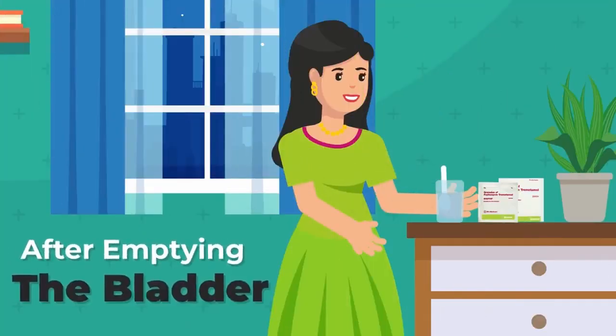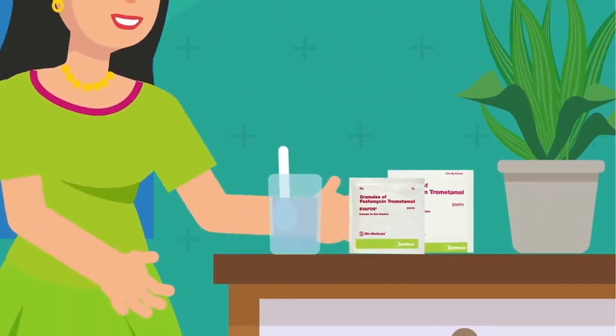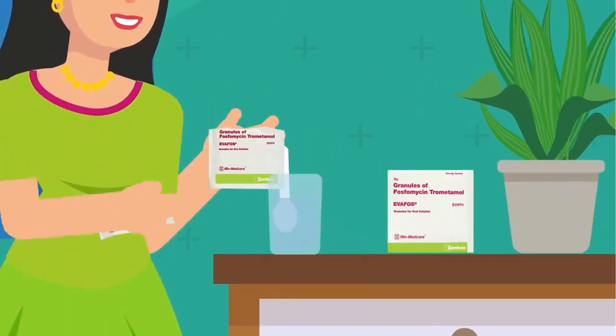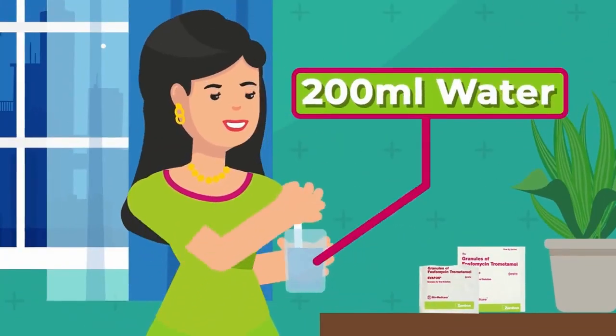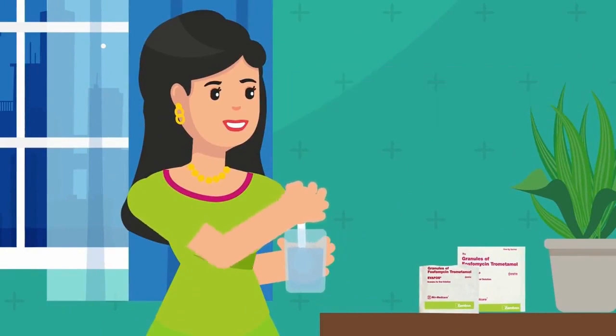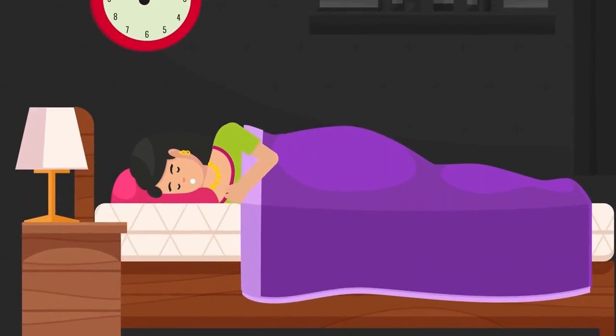After emptying the bladder, you should take EVAFOS. For taking EVAFOS, dissolve the content of one sachet of EVAFOS in one glass of water, that is approximately 200 milliliters. Drink the prepared solution of EVAFOS and thereafter you can go to sleep.